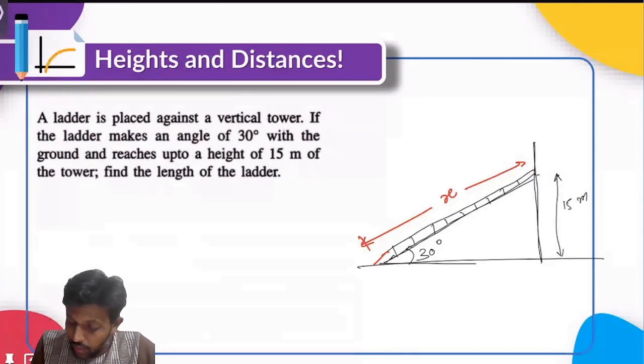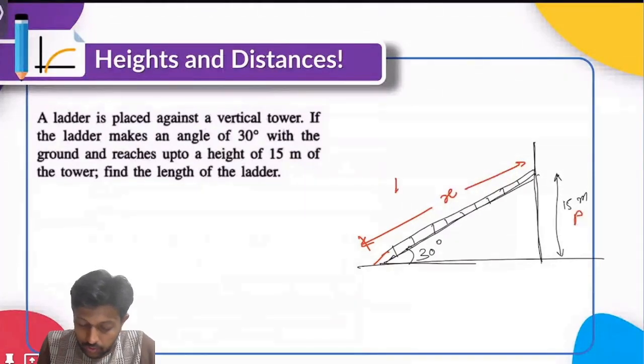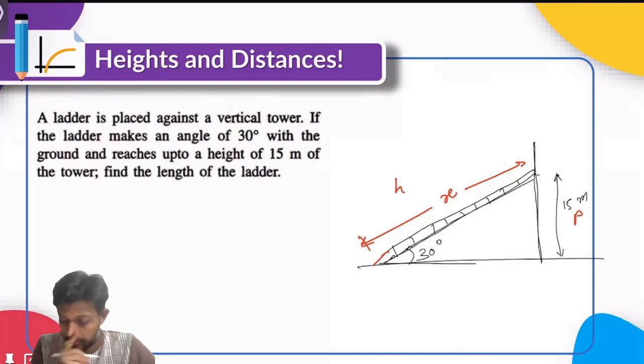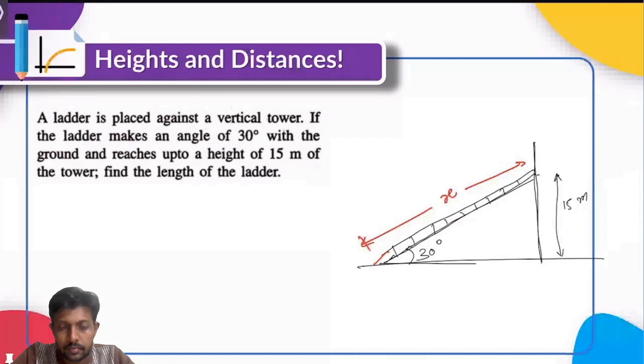The length of the ladder. So we have the perpendicular and we want the hypotenuse. 30 by 2. That's 15. But think. Is that possible? Because you are saying that perpendicular and the hypotenuse are of same length. Is that possible? No. So check again.